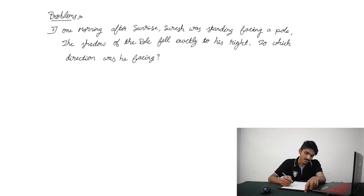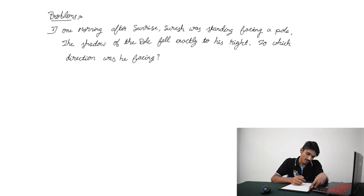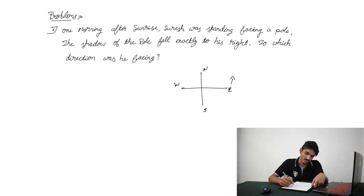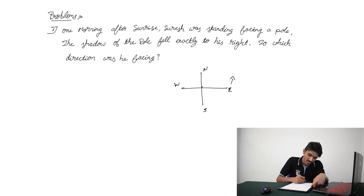The first question is: one morning after sunrise, Suresh was standing facing a pole. The shadow of the pole fell exactly to his right. To which direction is he facing? Reading the question, they have mentioned morning, so the sun will be rising in the East. They have mentioned Suresh was standing facing a pole, but didn't mention which direction he is facing. Since his shadow is towards his right, he must be facing South so that the shadow can fall to his right. So the answer is Suresh will be facing South.